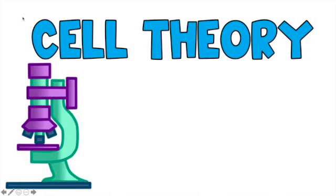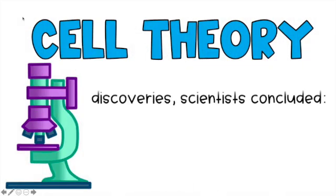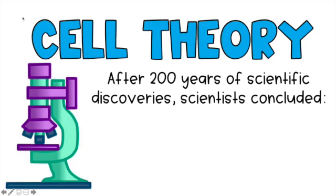Over the next 200 years there were major scientific discoveries, and scientists started to create better, more refined microscopes that could magnify even further. They were able to summarize some key things that we now know about cells, and these things together we call cell theory. There are three really important parts to cell theory.